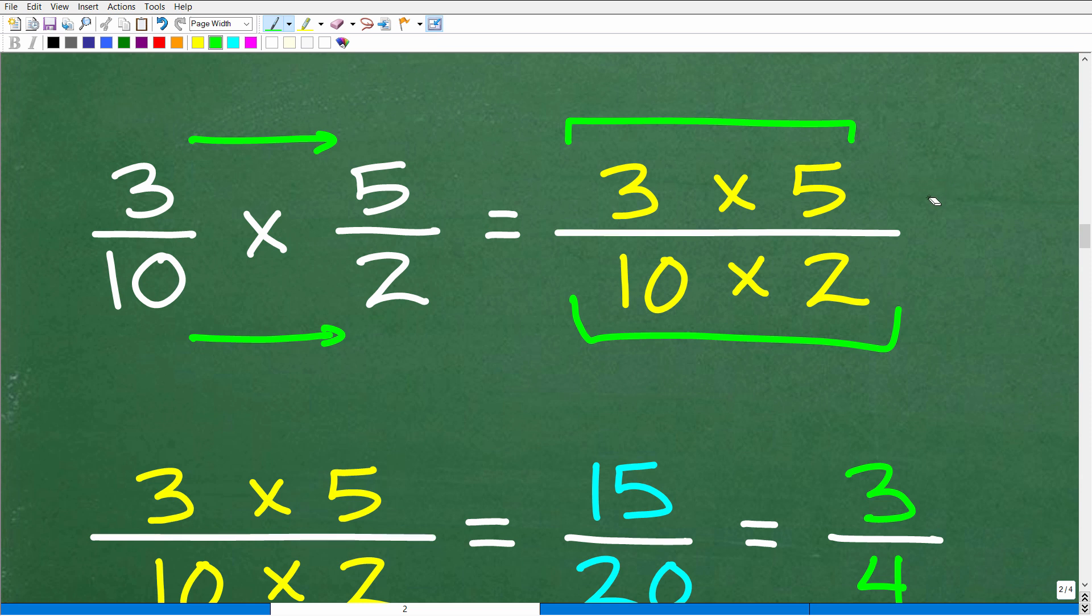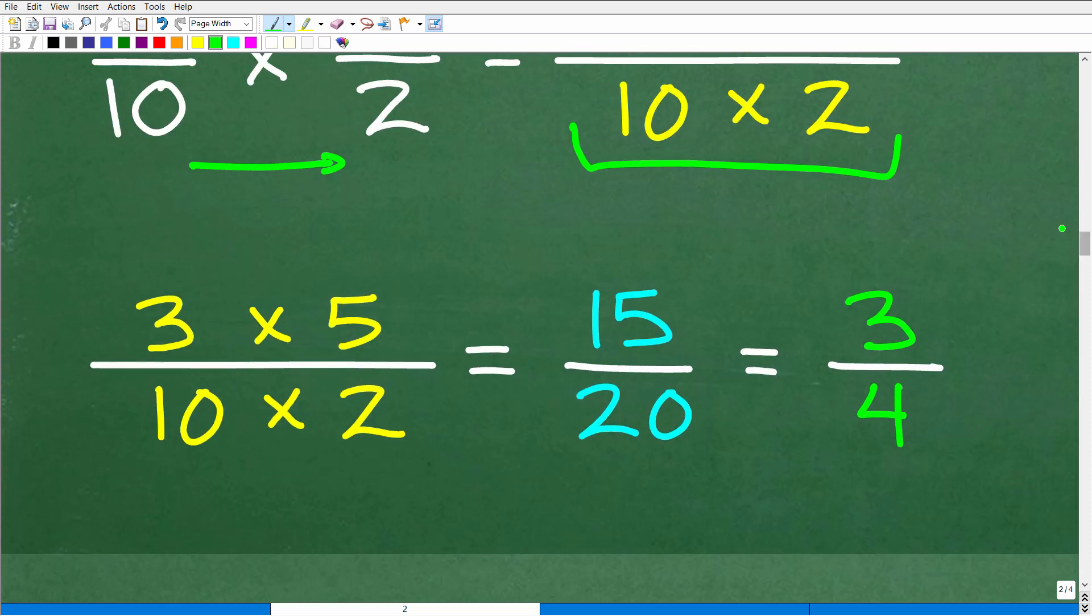All right, so I'm just taking it nice and slow here for those of you that might be a little bit rusty on fractions. So let's go ahead and clean this up. So 3 times 5 over 10 times 2. Most of you can see what the answer is going to be. So 3 times 5, of course, is 15. 10 times 2 is 20.